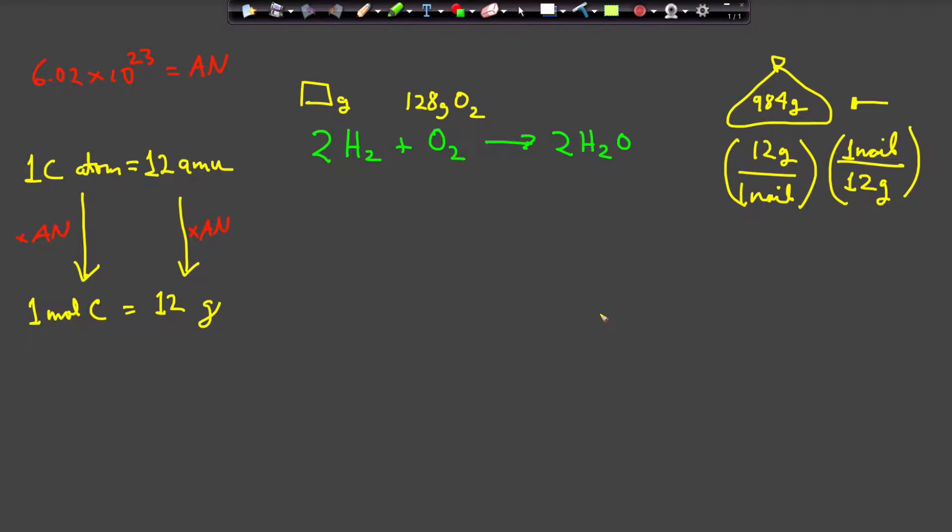I find a nail in the corner, weigh it, and see it weighs 12 grams. Now it's simple dimensional analysis: 984 grams of nails times 1 nail per 12 grams equals 82 nails. Notice I have determined the number of nails - I counted by weighing.